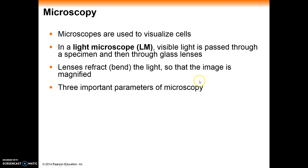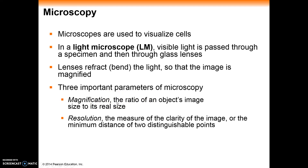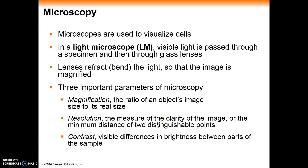There are several parameters when thinking about microscopy that we need to consider. Number one is magnification — how large something is relative to its real size. Resolution is the ability to measure the clarity of an image, or to see two distinguishable points as two separate objects; as resolution goes down, you lose that ability. And then there's contrast — sometimes we can see something through a microscope but not differentiate its parts, and that comes down to contrast.